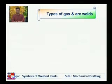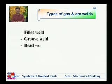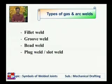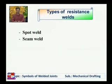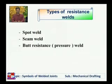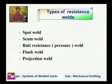Types of gas and arc welds include: fillet weld, groove weld, bead weld, and plug weld or slot weld. Types of resistance welds include: spot weld, seam weld, butt resistance weld (also called pressure weld), flush weld, and projection weld. These are the widely used resistance welds.